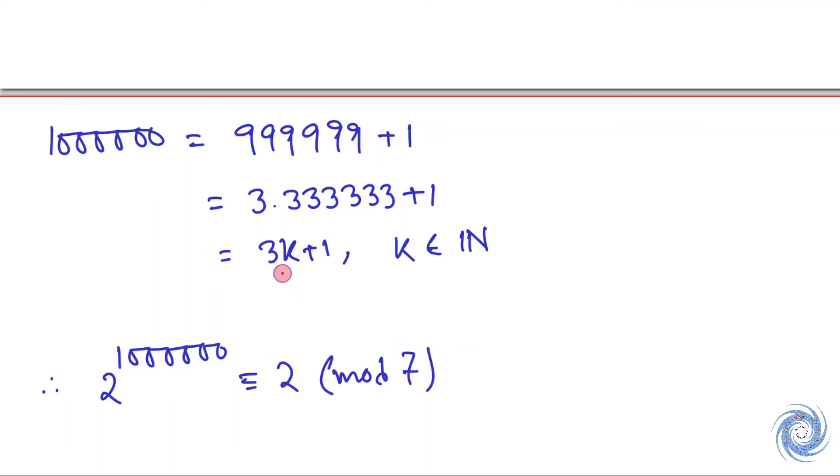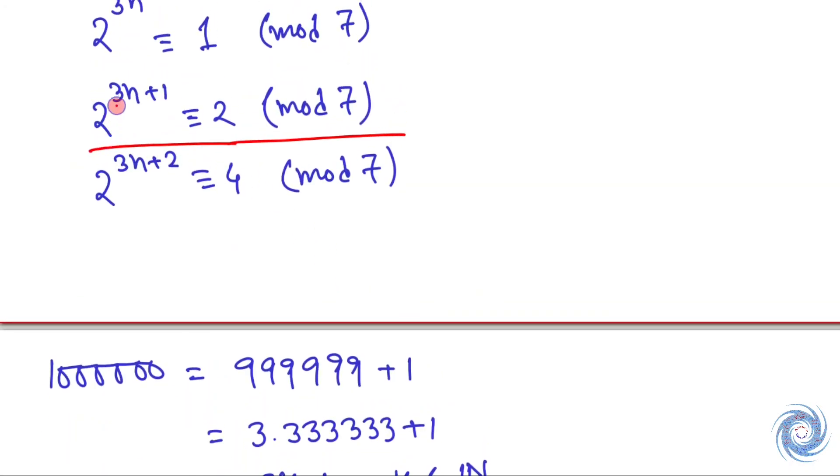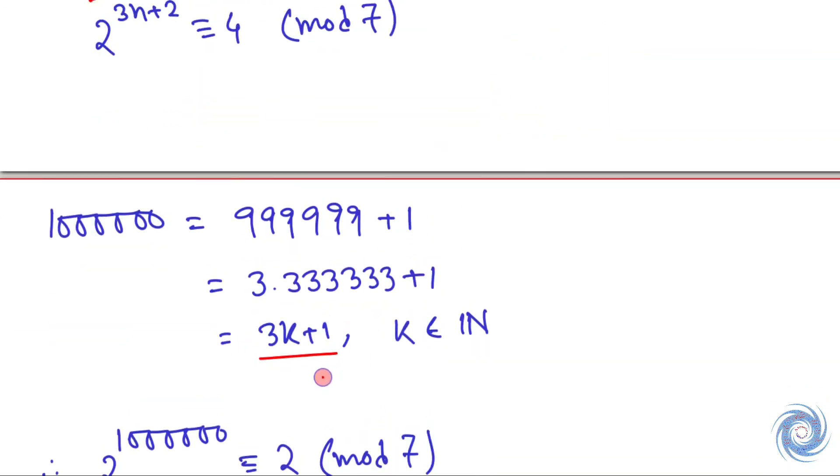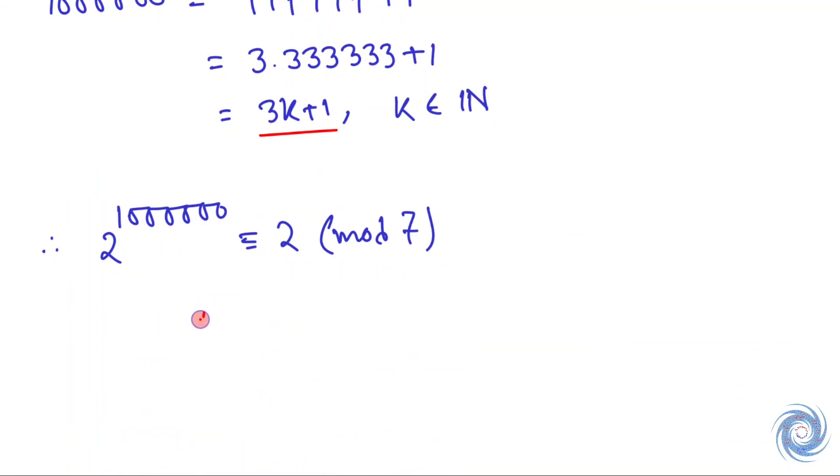Since this number is of the form 3k+1, and we have 2 to the power 3n+1 is congruent to 2 mod 7, where n belongs to the set of all natural numbers, we have remainder equals 2.